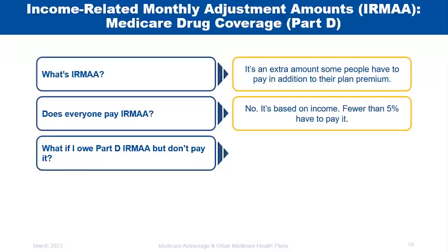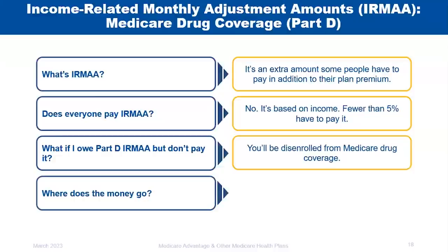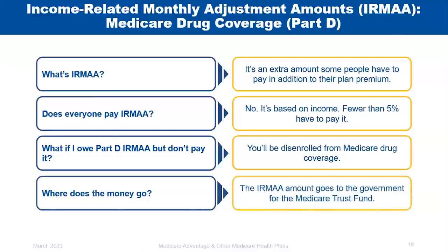If you owe IRMAA and refuse to pay it, there are consequences. You could be disenrolled from Medicare coverage altogether. If you later rejoin a prescription drug plan, you'll face a penalty for the months you lacked drug coverage. You can contest or appeal the IRMAA amount. The money goes back to the Medicare trust fund, not to the prescription drug plan.